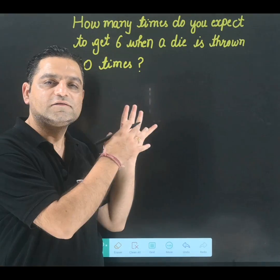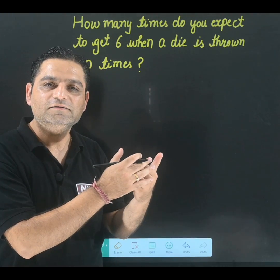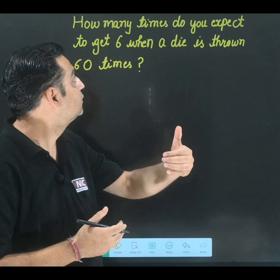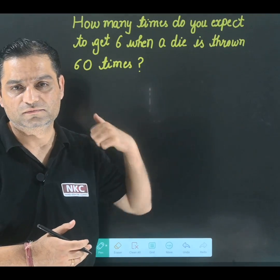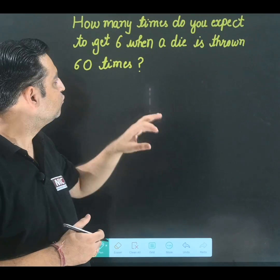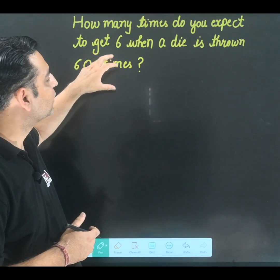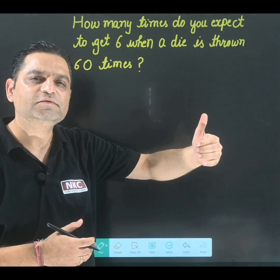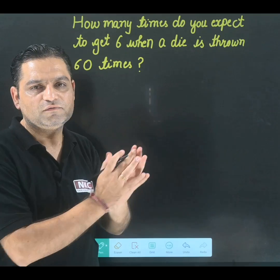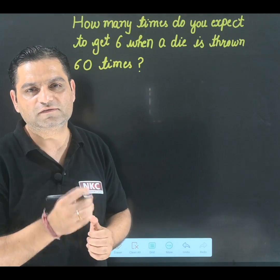Usually we get these type of questions for single dies like what is the probability that it will come out to be 6 when a die is thrown. But when it is told to find how many times 6 is coming when it is thrown 60 times, then a slight difference will be there.